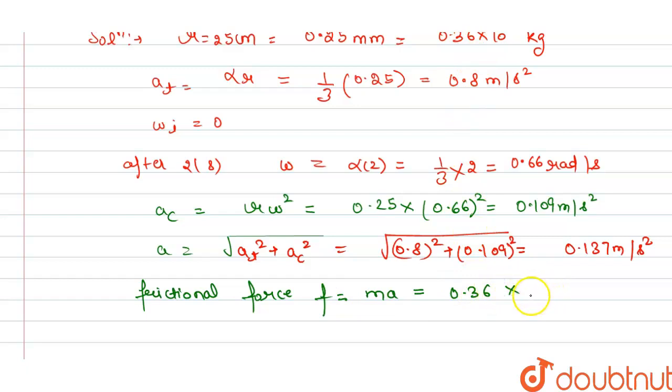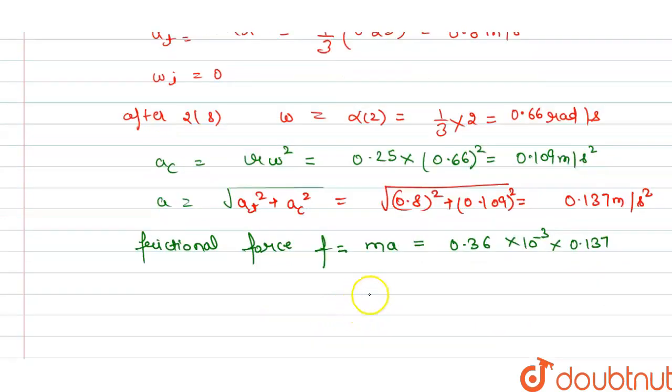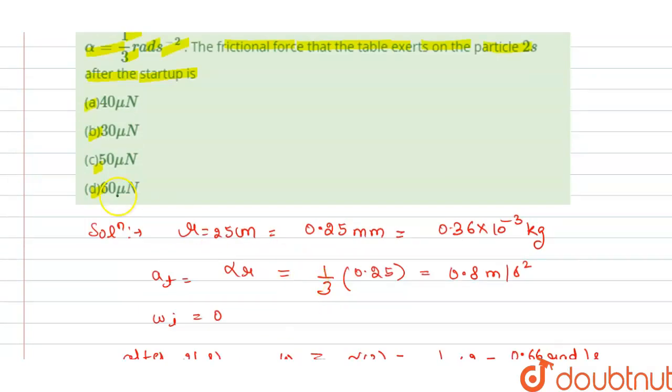10 power minus 3, and acceleration is 0.13. From this we get 50 mu newton. So this is our frictional force. Now we check which option is correct. Our option c is correct. Thank you.